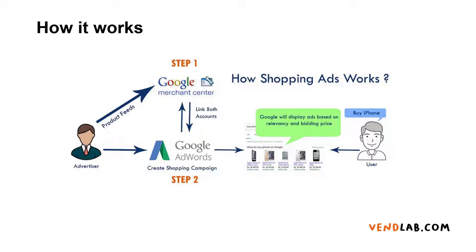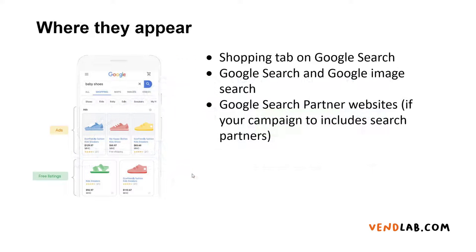These campaigns will take the product data from Google Merchant Center. The campaign will then create ads on the Google search pages and also on other sites, for example Google search partners. So where do Google Shopping ads appear? They will appear on the shopping tab of Google search, also on Google search and Google image search, and also in Google search partner sites if you've chosen this option.